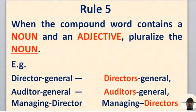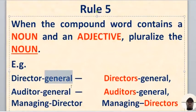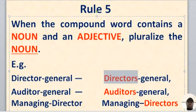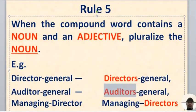Rule five: when the compound word contains a noun and an adjective, pluralize the noun only. For example, director-general — general is an adjective, so disregard it. The correct form is directors-general. Auditors-general — general is an adjective, auditor is the noun, so auditors-general. Managing director — managing is the adjective, director is the noun, so managing directors.